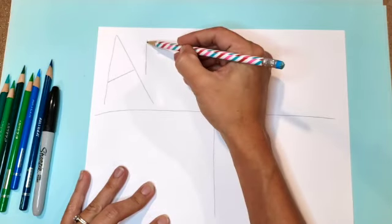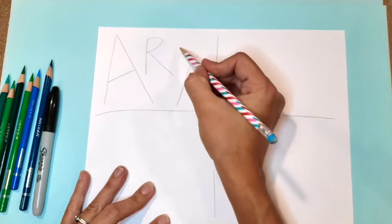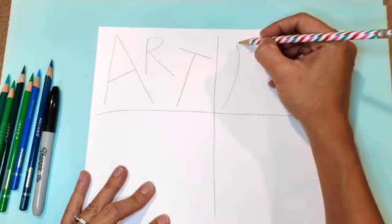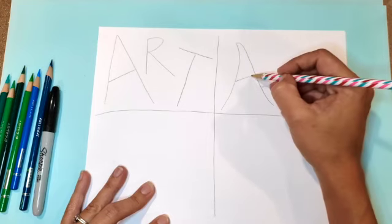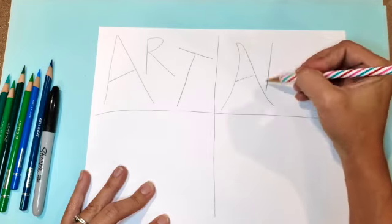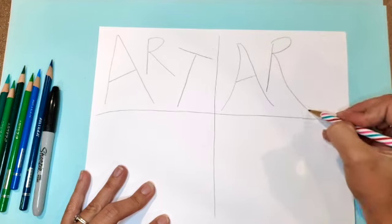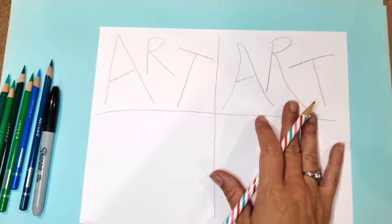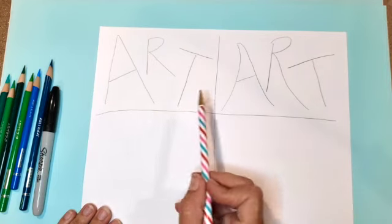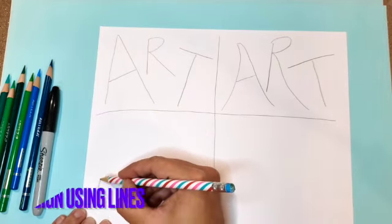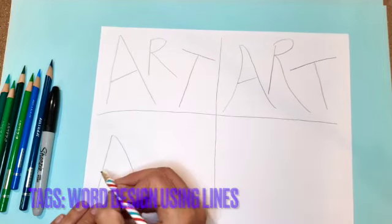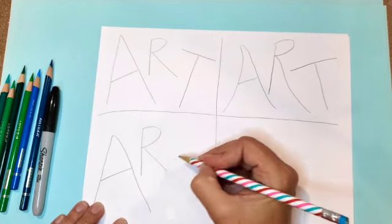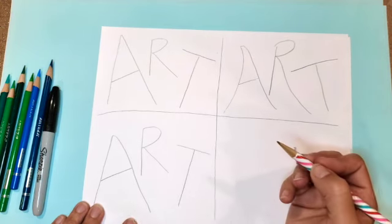In the first box I'm going to write the word 'art' — you can write your name if you wish. I'm going to try to make the letters interesting, doing all capital letters. In the second square you could do capital and lowercase letters. I chose to stay with capitals but try to make it a little different. These are what are called tags, which are just lines.